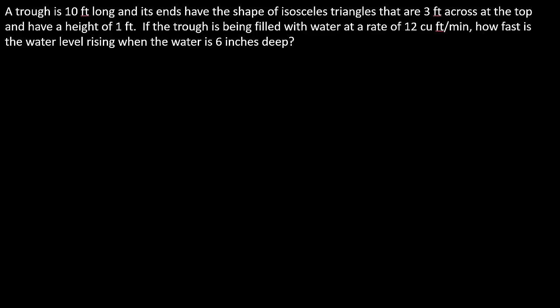All right, so a trough is 10 feet long and its ends have the shape of isosceles triangles that are 3 feet across at the top and have a height of 1 foot. If the trough is being filled with water at a rate of 12 cubic feet per minute, how fast is the water level rising when the water is 6 inches deep?